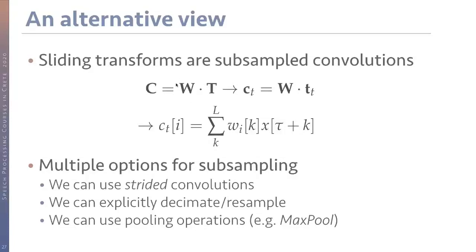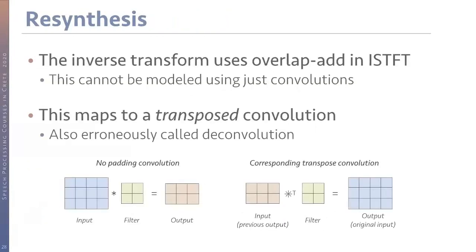The key idea: the short-time Fourier transform front end could be a neural network layer — either a convolutional layer or a simple dense layer depending on how you arrange the input. So what we have as a front end, that STFT, could be replaced by a neural network layer. Now let's look at the re-synthesis side.